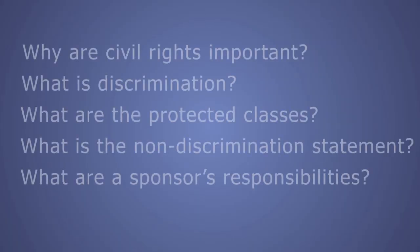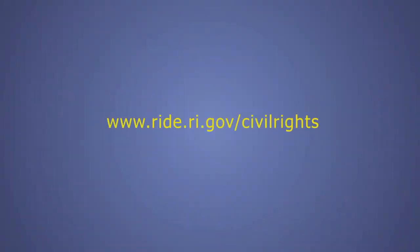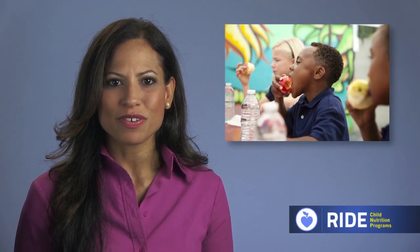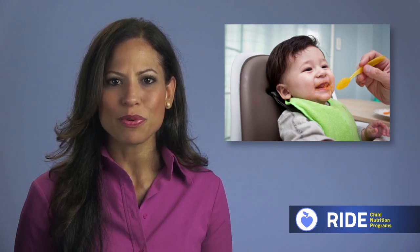Today we'll talk about why civil rights are important, what is discrimination, what are the federal and Rhode Island's additional protected classes, what is the federal non-discrimination statement and when must you use it, and what are a sponsor's responsibilities. Handouts related to many of these topics are available online for you to print out. You may download a certificate of completion at the end of this training module by answering a few brief questions regarding civil rights. Keep the certificate in your CACFP training file to verify program completion.